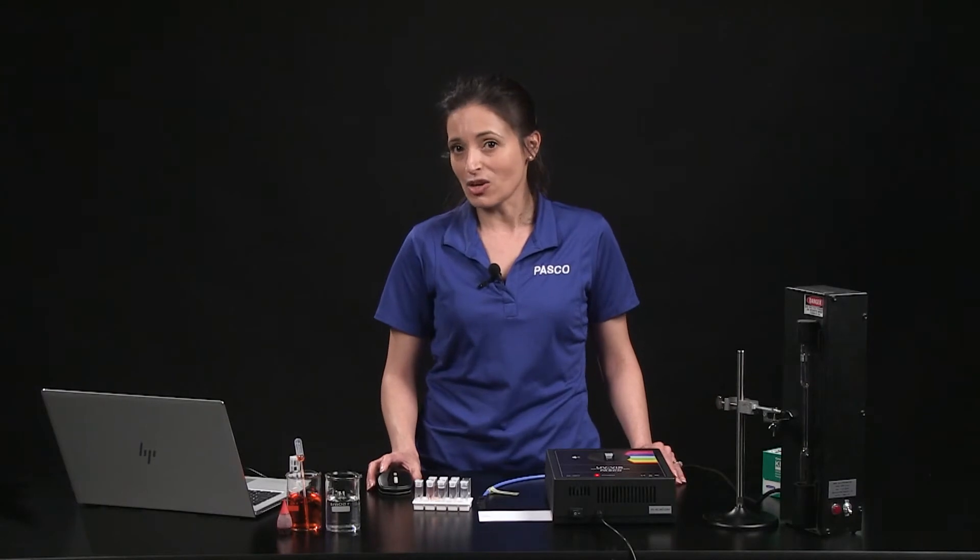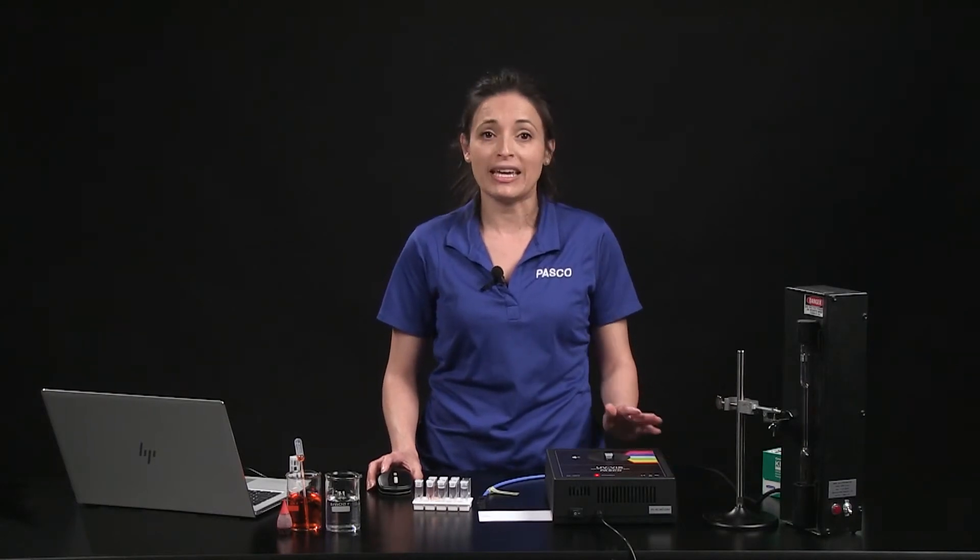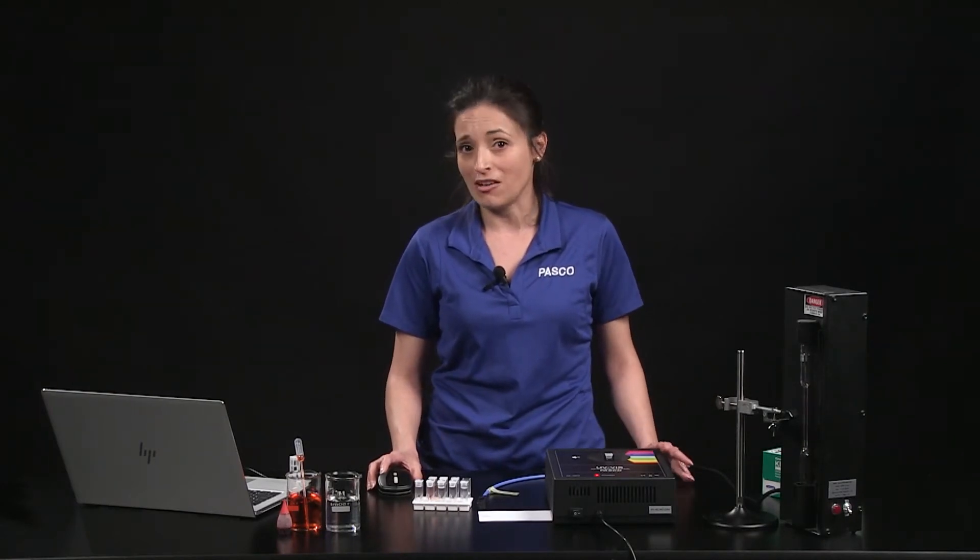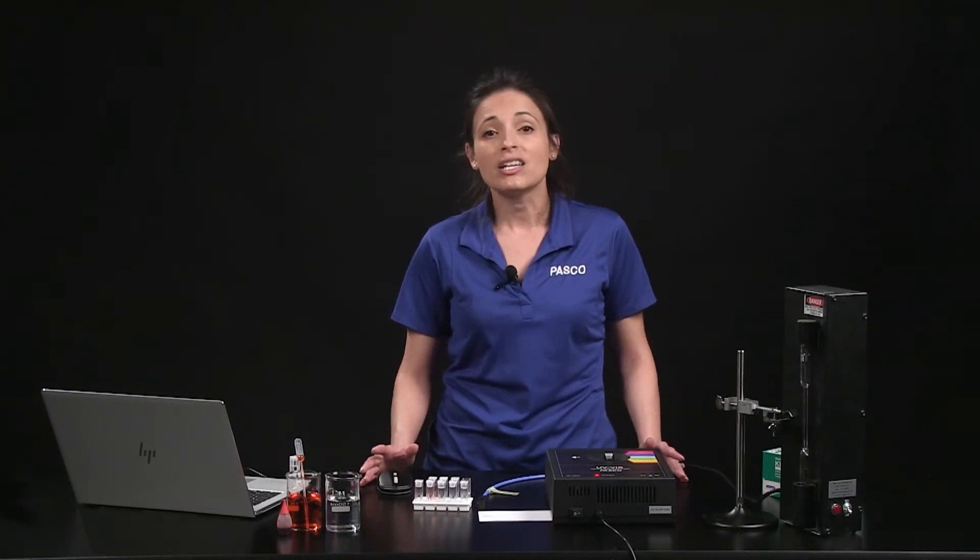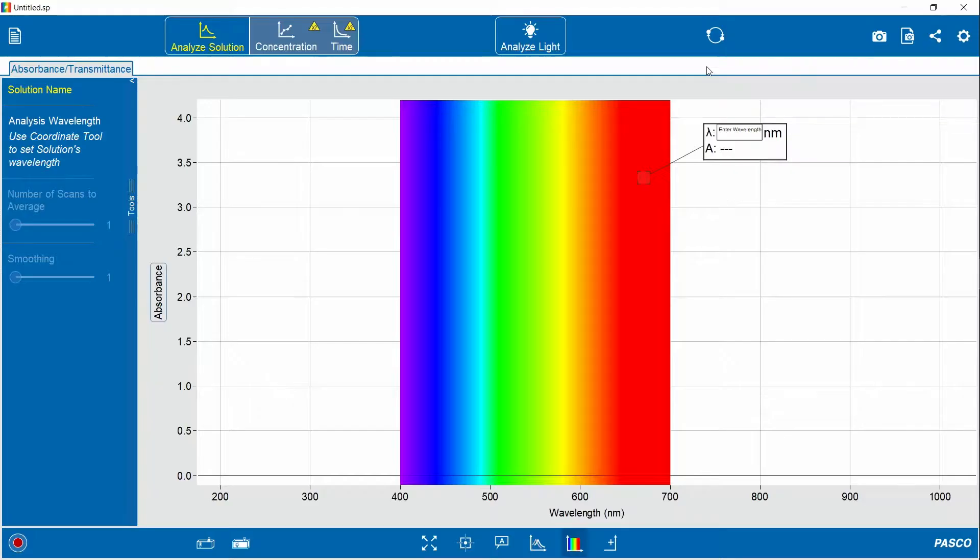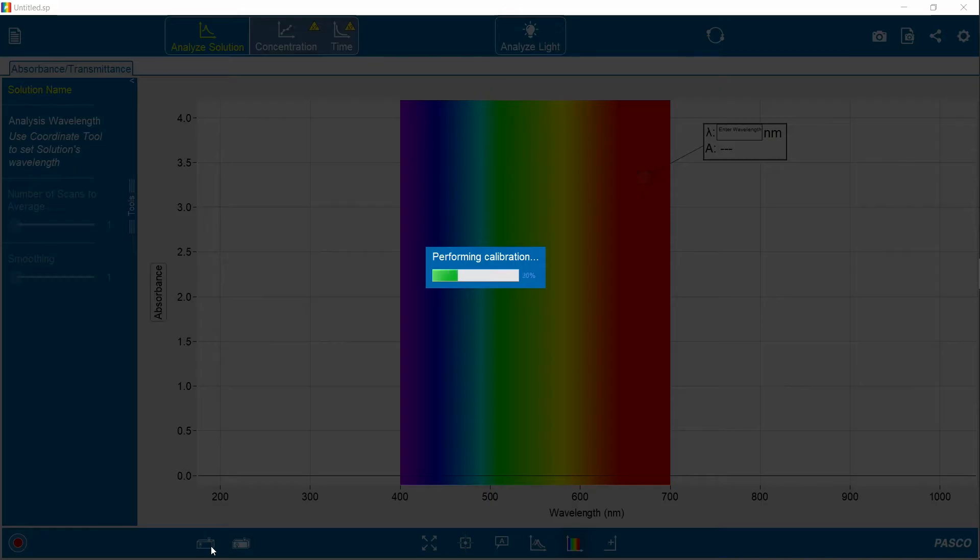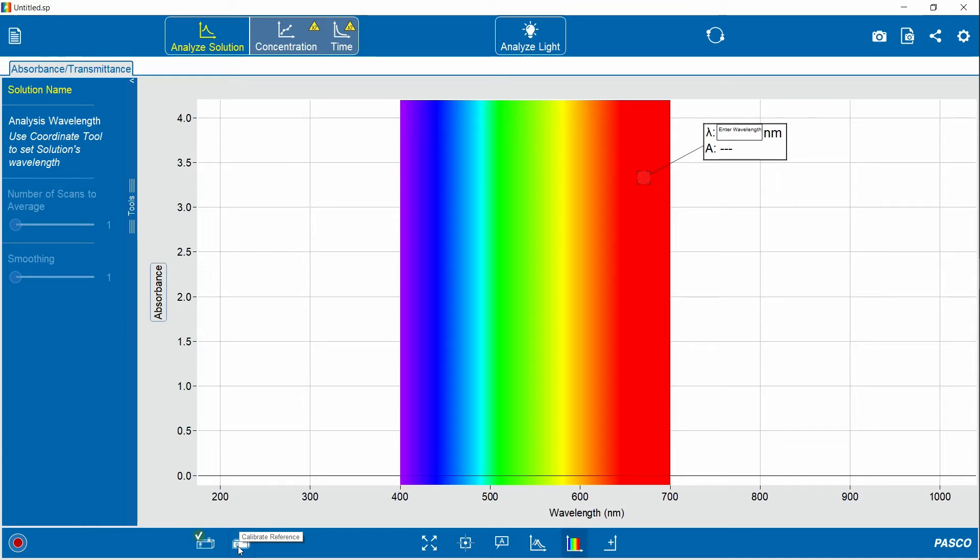To investigate solutions, start by calibrating the spectrometer with your blank or the substance that you use as a solvent. I used distilled water for the solutions I'm using today, so that's what's in this cuvette. In the software, click calibrate dark, and then calibrate light.